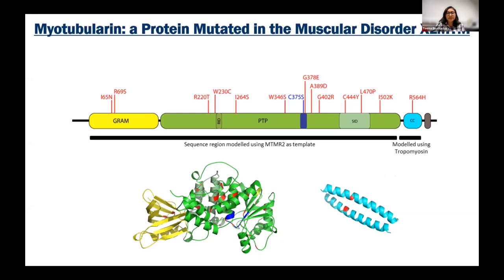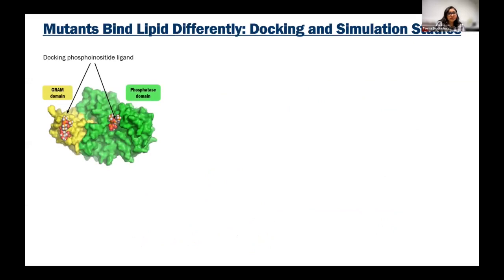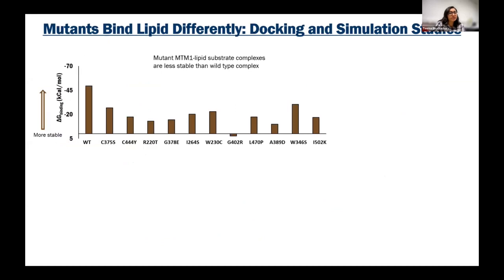The single coiled-coil domain mutant maps to the dimeric interface — the coiled-coil domain is important for dimerization, which enhances lipid phosphatase activity. We docked the phosphoinositide lipid ligand to both the GRAM domain and the phosphatase domain. Focusing on the phosphatase domain results, the wild-type shows the most stable binding free energy between MTM1 and the lipid substrate, while all mutants are heavily destabilized. An interesting finding was that mutants start interacting with the phosphate group in ways that differ from wild-type residue interactions.